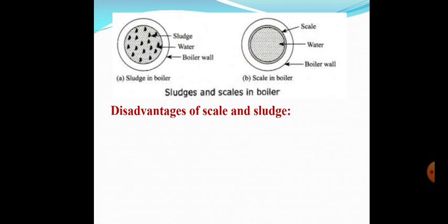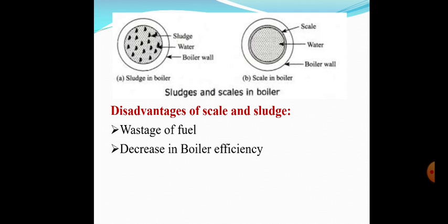Following are some of the disadvantages of scale and sludge formation. The first one is wastage of fuel: scales are bad conductors of heat, acting like a coating and insulating material on a metal surface, which reduces the rate of heat transfer from the boiler to water, causing excessive heating and wastage of fuel. The second one is decreased boiler efficiency: excessive scaling and sludge may cause clogging of tubes, reducing water circulation and impairing the efficiency of the boiler.